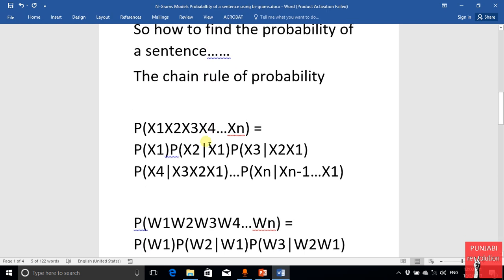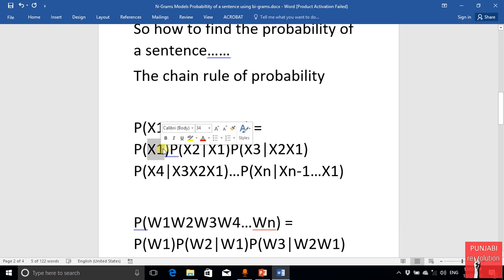The chain rule says probability of n factors like X1, X2, X3, X4, and Xn is equal to probability of X1 into probability of X2 given previous X1, and X3 given previous X1 and X2, and then probability of X4 given all three previous factors, and similarly probability of Xn given all the previous factors. So this is the chain rule.